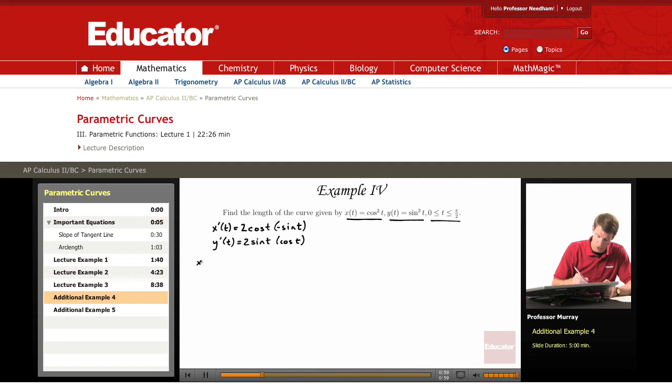So if we square each one of those, x'(t)² is 4cos²t sin²t and y'(t)² is 4sin²t cos²t.